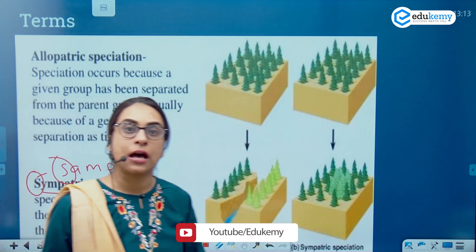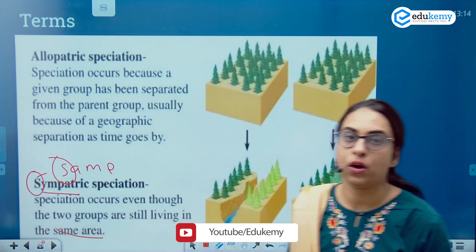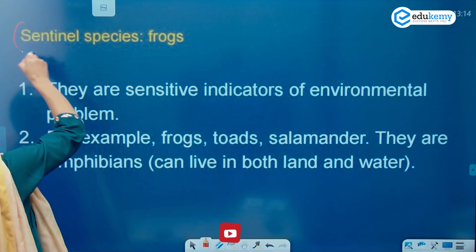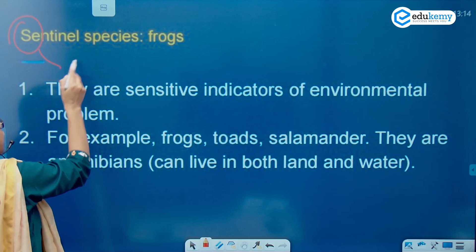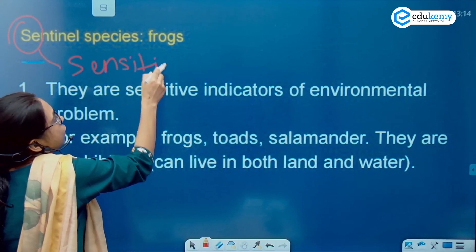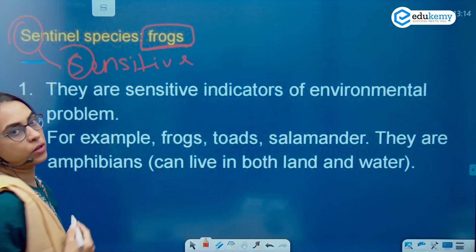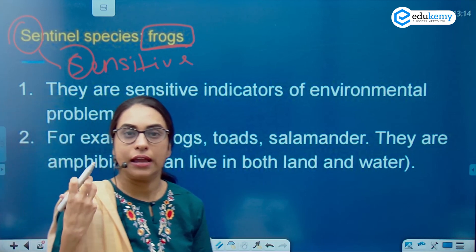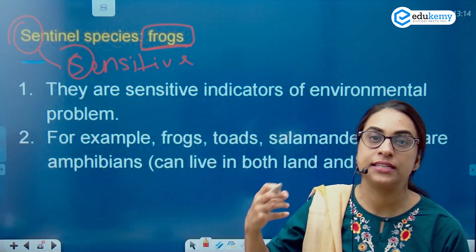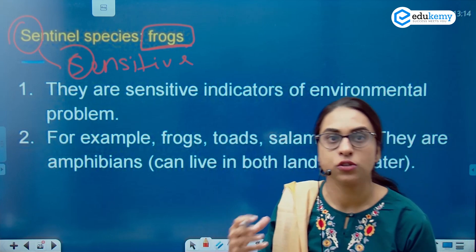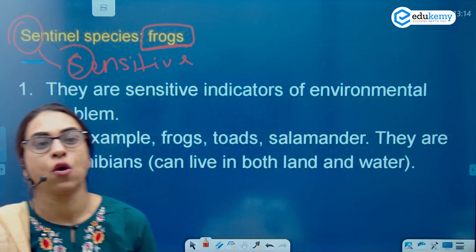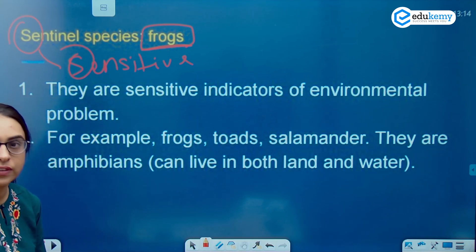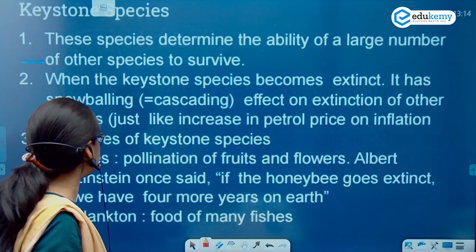Also understand some other terms important for your examination. Sentinel species — 'S' stands for sentinel and 'S' stands for sensitive, and you can remember the example of the frog. A sentinel species is a sensitive indicator of environmental problems; any environmental problem affects these species to a larger extent. Amphibians — frogs, toads, salamanders — are some examples of sentinel species.